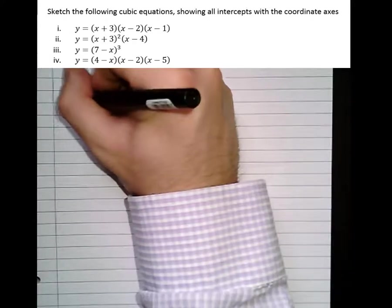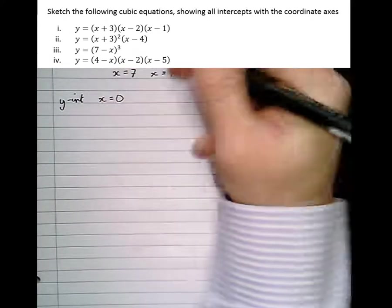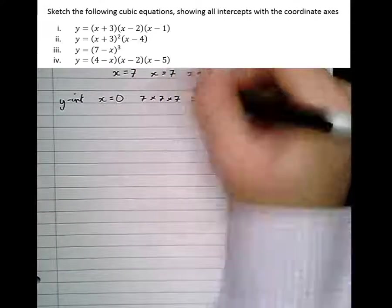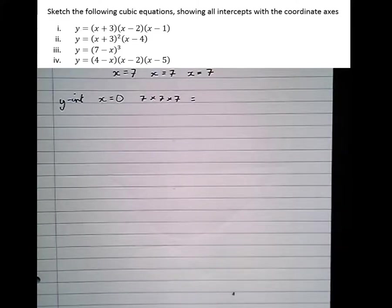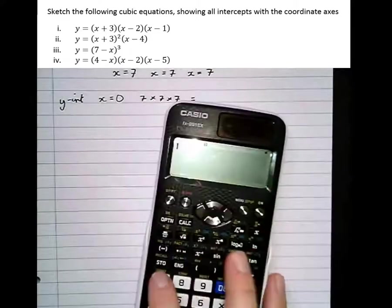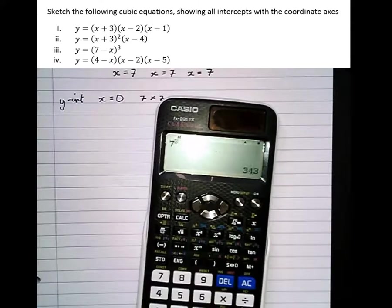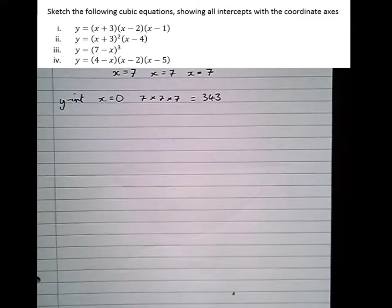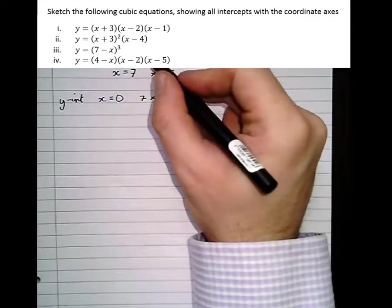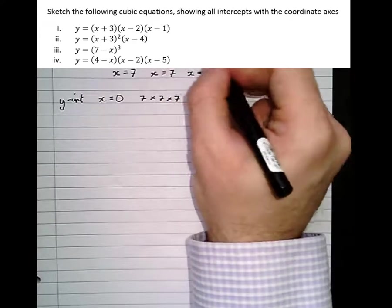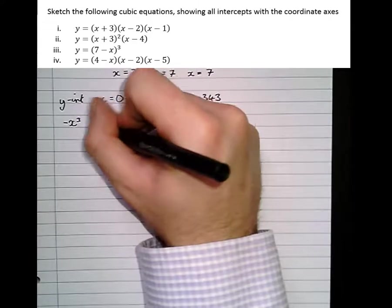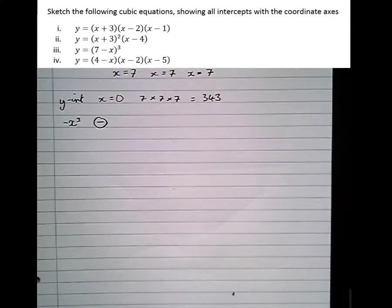So three roots at X equals 7. Now the Y intercept is when X equals 0. So we end up with 7, times 7, times 7. So putting that into a calculator, 7 cubed is equal to 343. And times in the X's together, we've got minus X, times minus X, times minus X, which gives us minus X cubed. So actually this is a negative graph, so it's going to have this shape, potentially.